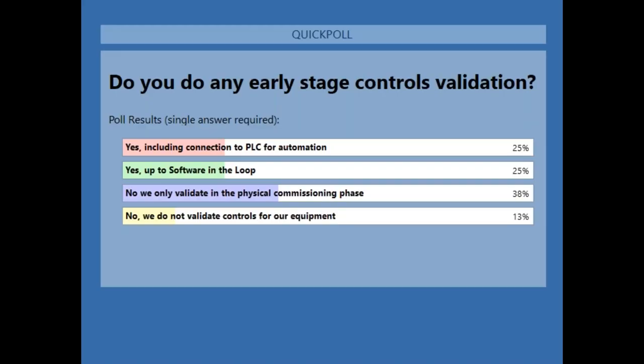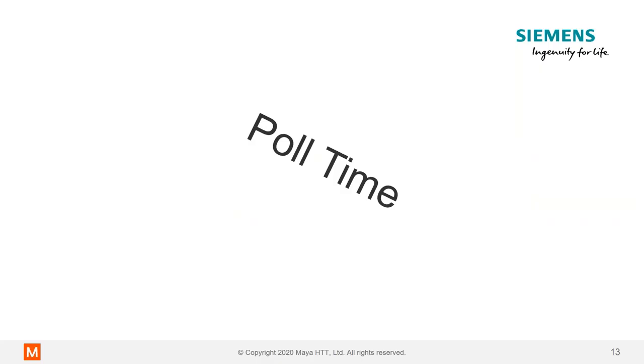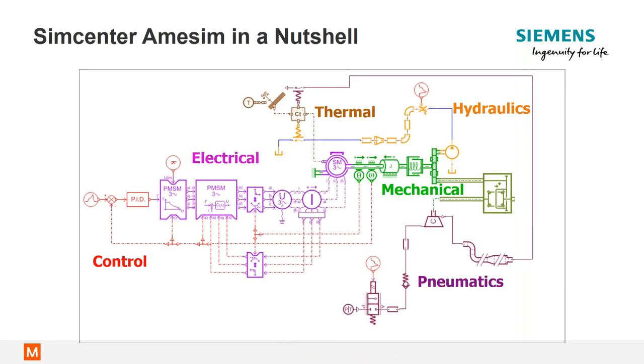Looking at the poll results, the majority of attendees are only validating in the physical commissioning phase — which is typical of many customers we speak with who are looking to do more early-stage validation. There are also some who are working at the SIL or PLC level. Connecting to the PLC level or SIL level may be something to discuss in a future session. Thank you for that input. I'll pass it back to Hassan to continue.